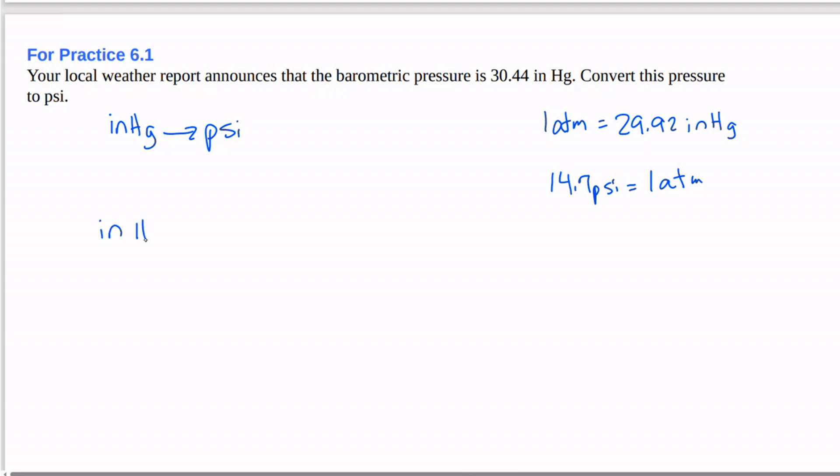So we're going to convert inches of mercury to atmospheres using the 1 atmosphere is 29.92 inches of mercury conversion factor. And then we'll convert atmospheres to PSI using 14.7 PSI is 1 atmosphere.